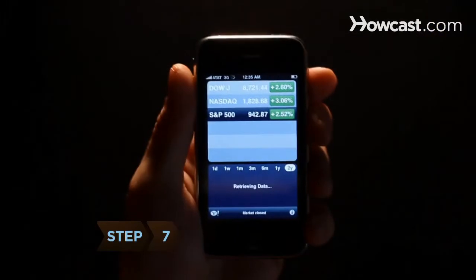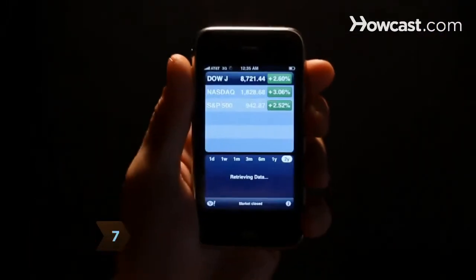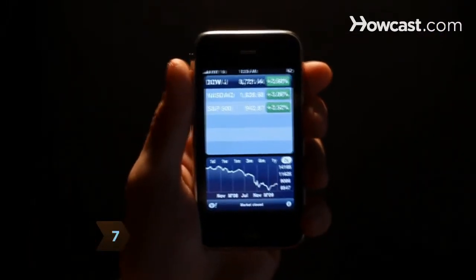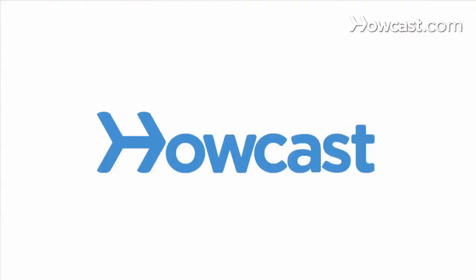Step 7: Now it's up to you to strike stock gold, all with just a few finger taps. Did you know the longest listed company on the New York Stock Exchange is the power company Con Edison, which dates back to 1824.